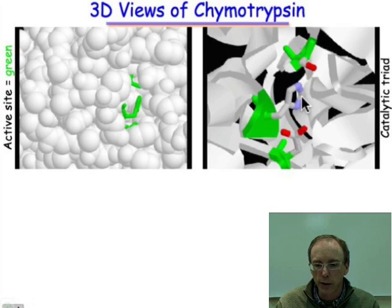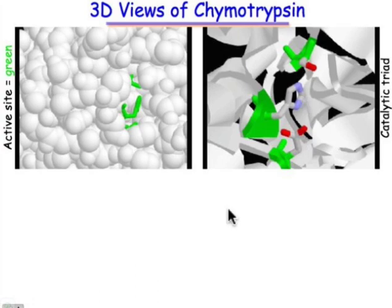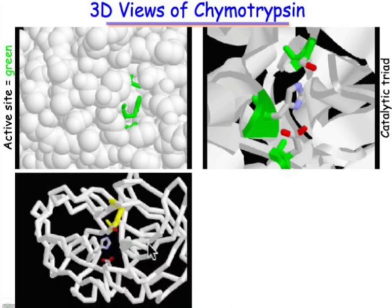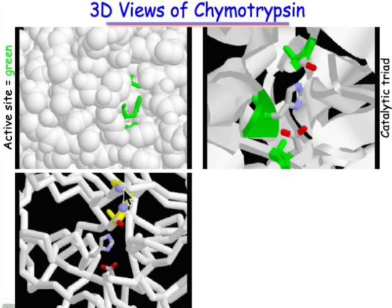Serine, histidine, and aspartate are all visible, clearly lined up in a row. Here we can see the oxyanion hole and its relationship to those three groups. At the bottom we have the aspartate, then the imidazole ring of histidine, and the serine group. Colored in yellow is the catalytic triad positioned into the oxyanion hole — those two nitrogens in yellow form the oxyanion hole, which helps to stabilize the tetrahedral intermediate.